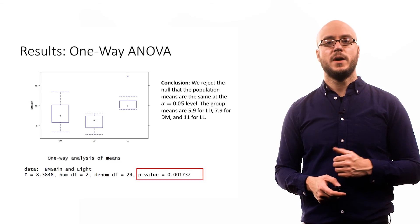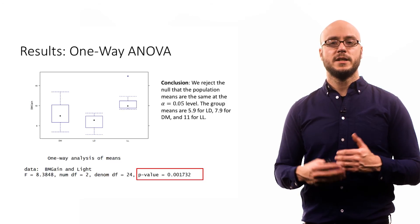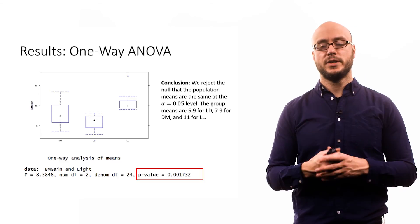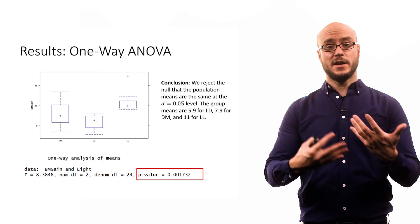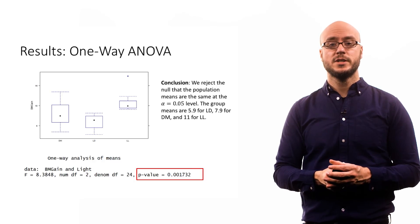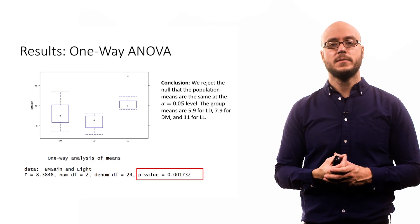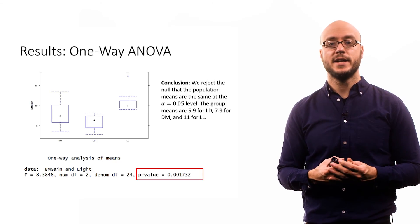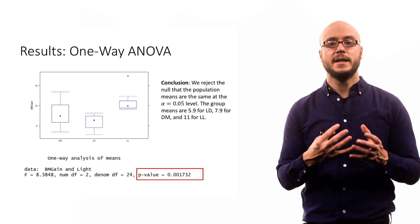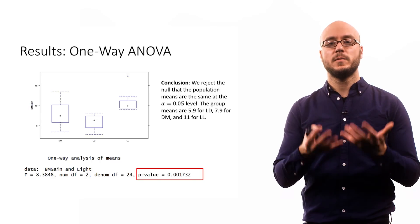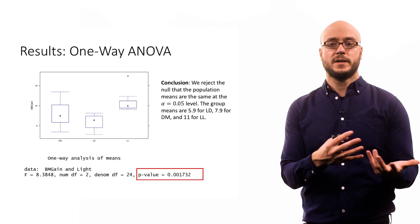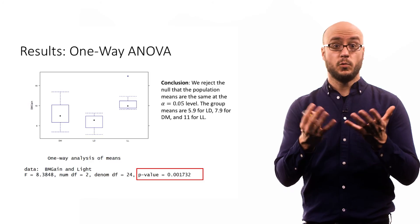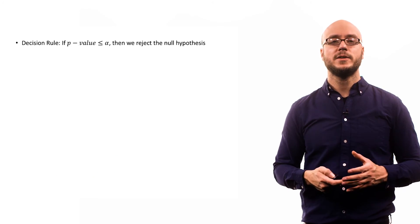We reject the null that the population means are the same, and we say that these groups really are quite different. In the context of this particular study, we can say these different exposure conditions, they do have different effects on the weight gain of mice. To put another way, these results suggest that being exposed to light at night increases weight gain in mice. Then the popular press picked this up and said, maybe you shouldn't be looking at your computer at night, or watching television at night because that might increase weight gain.